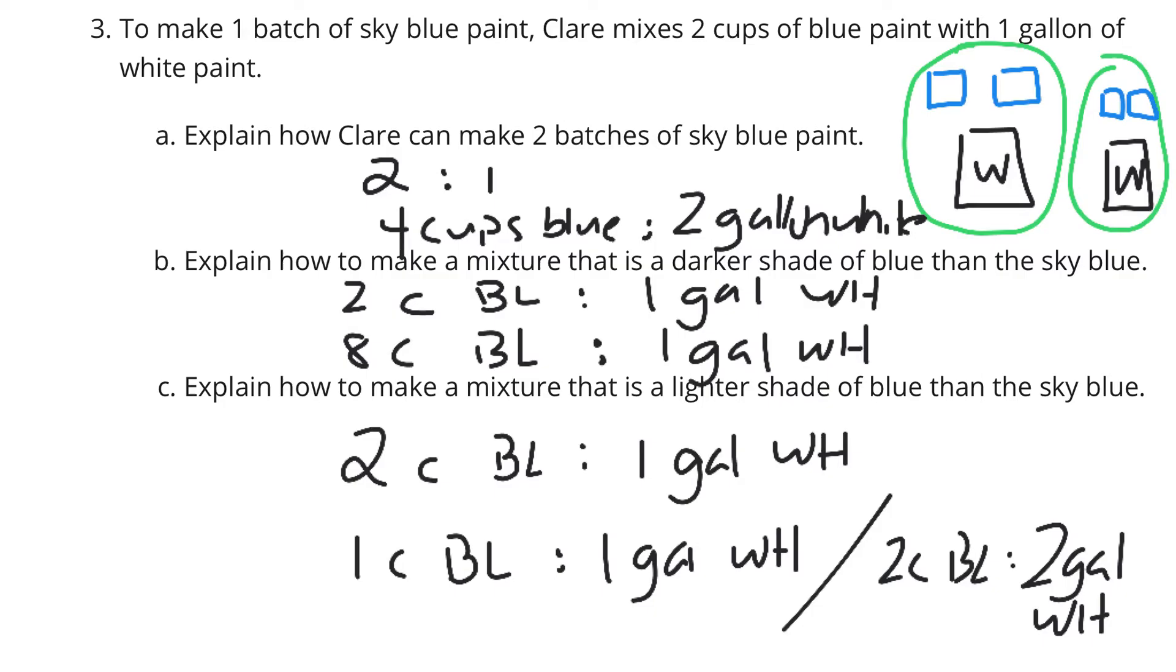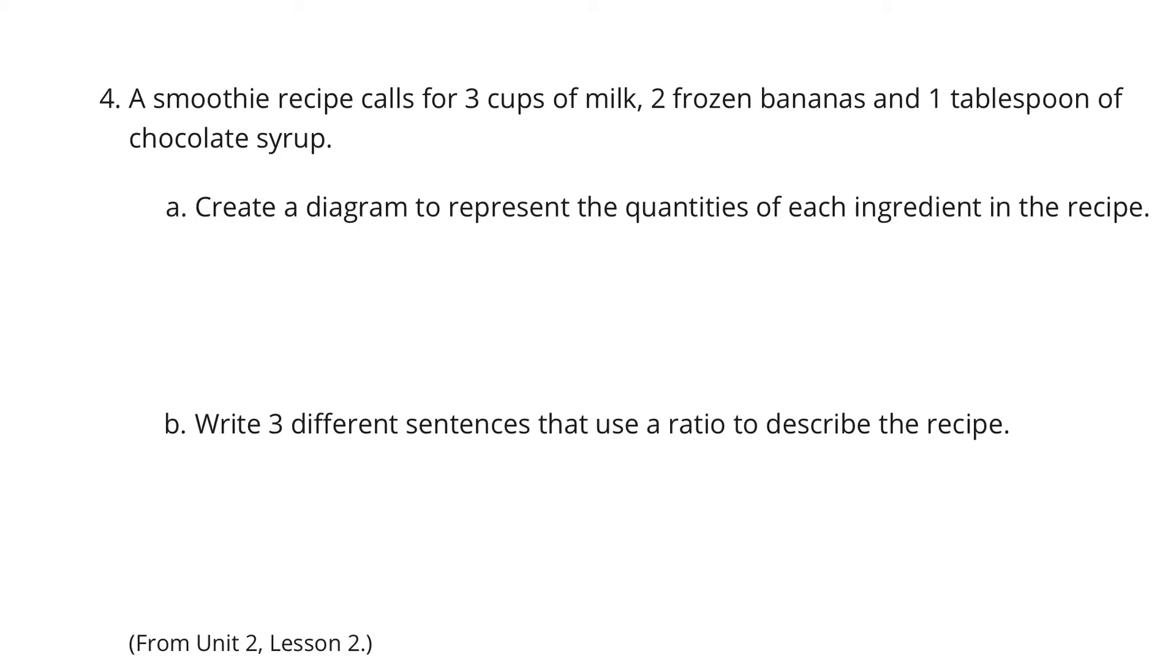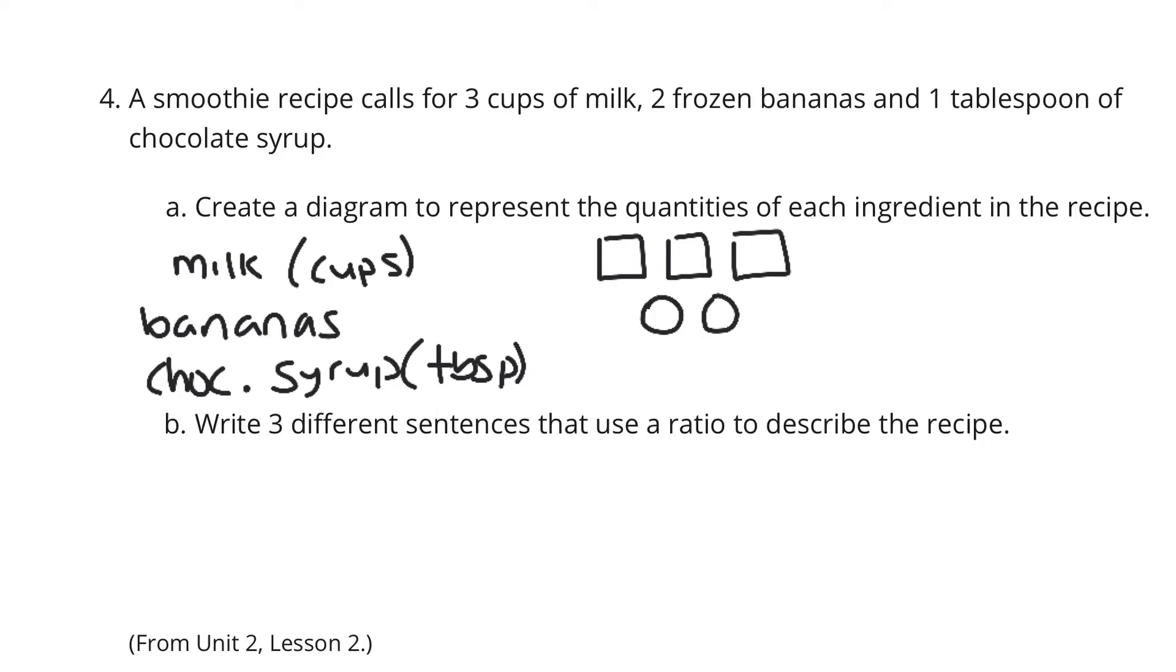Let's move on to question four. Talking about a smoothie here. A smoothie calls for three cups of milk, two frozen bananas, and one tablespoon of chocolate syrup. Create a diagram to represent the quantities of each ingredient in the recipe. Let's start with our milk. We'll have milk, and this milk is in cups. We're going to have bananas. No unit there. And then we have, I'm going to abbreviate here, chocolate syrup. And this is tablespoons. And so our milk, three cups of milk, one, two, three, two frozen bananas, one, two, and one tablespoon of chocolate syrup.